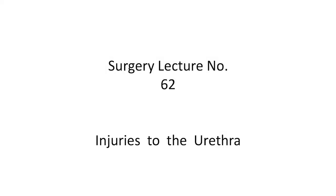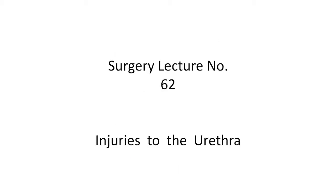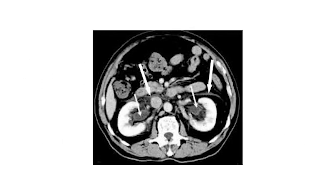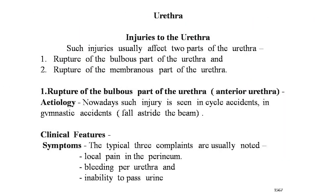Welcome students to surgery lecture number 62: injuries to the urethra. In this lecture we will cover rupture of the bulbous part of the urethra (anterior urethra) and its management, rupture of the membranous urethra (posterior urethra) and its management, complications of urethral ruptures including extravasation of urine, urethritis, and urethral stricture and its treatment.